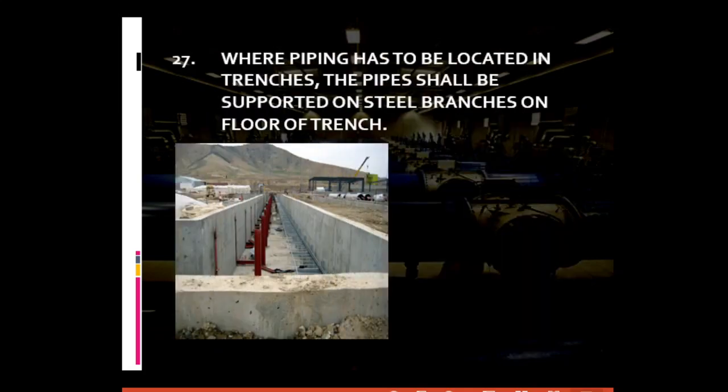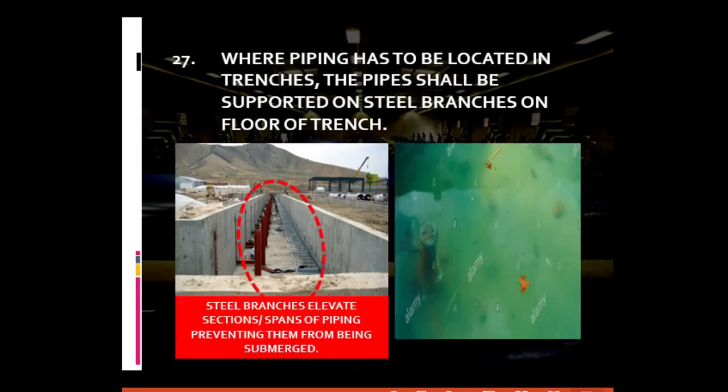For general piping requirement number twenty-seven: where piping has to be located in trenches, the pipes should be supported on steel branches on the floor of the trench. If piping is located in trenches or dug earth, they should be mounted on top of steel branches or supports to prevent them from being totally submerged, especially if such trench is accidentally flooded. This allows easier monitoring as well as easier access to the pipes. Steel branches elevate sections or spans of piping, preventing them from being submerged.